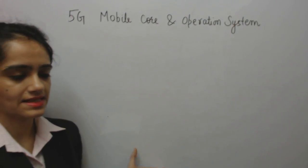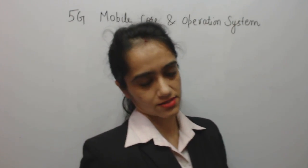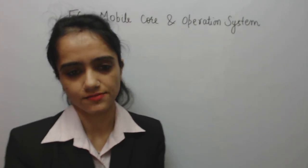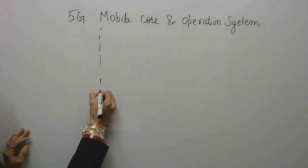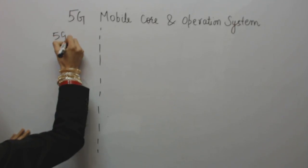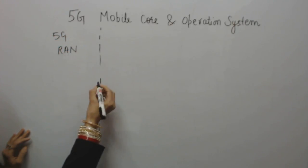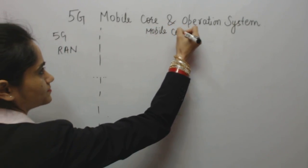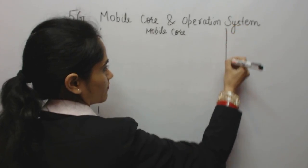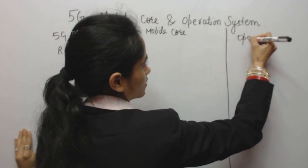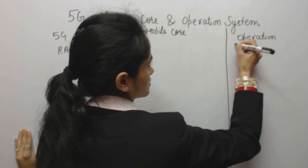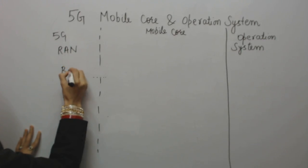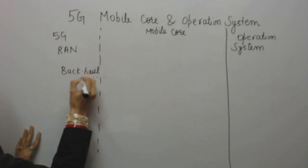In our previous class we discussed about 5G radio access network. Today we are starting with 5G mobile core and operation system. This radio access network is connected to the mobile core, and another component is the operation system. The RAN part is connected with a backhaul link.